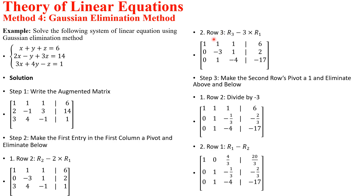The next thing is to also eliminate the element in the first column of the third row. The new Row 3 will be Row 3 minus 3 times Row 1. We are still using 1 as the pivot, so nothing changes there. We are performing two row operations simultaneously under this step — Row 1 as the pivot for each row operation.